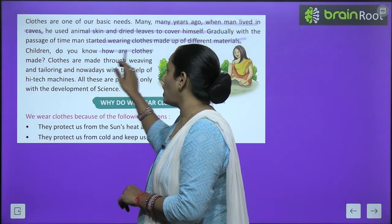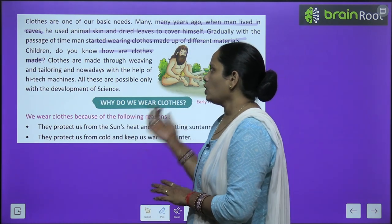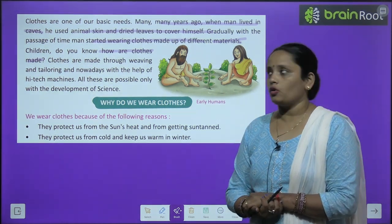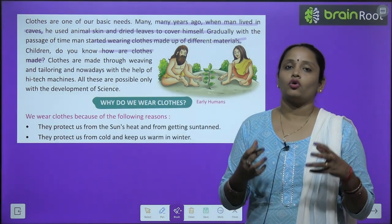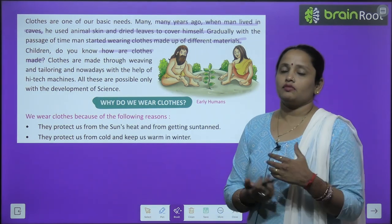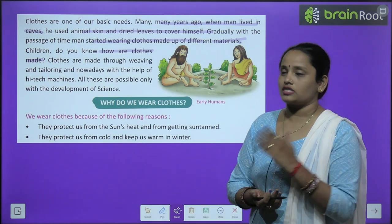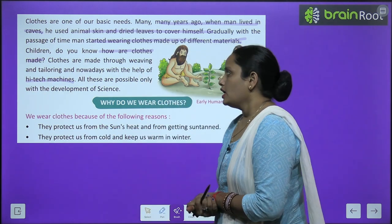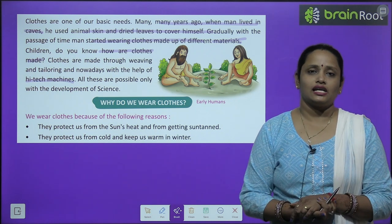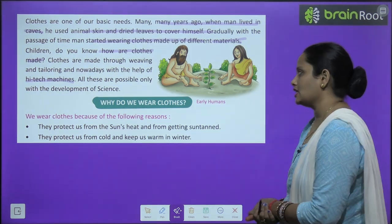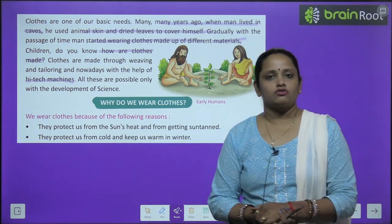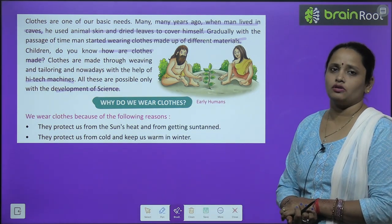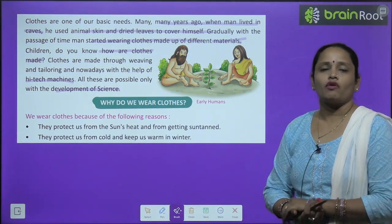Do you know how clothes are made? Clothes are made through weaving and tailoring, and nowadays with the help of high-tech machines. Dhagon ko weave kiya jata hai, phir tailoring ki jati hai — proper structure mein kaat ke silai ki jati hai. Ek machine ek saath bohut saare kapde kaat leti hai, aur doosri machine fatafat se silti hai. All these are possible only with the development of science — science ki wajah se kapdon ki manufacturing mein bhi kaafi advancement aa rahi hai.